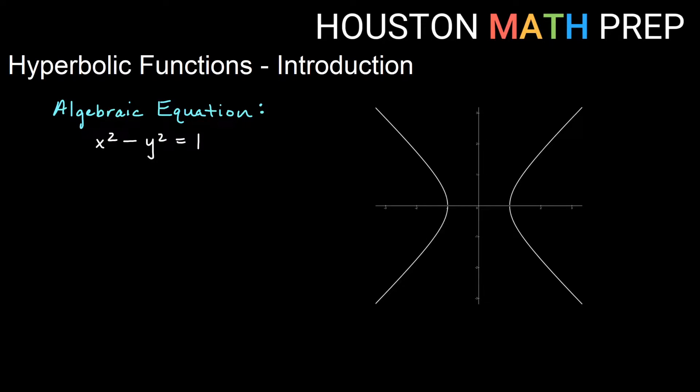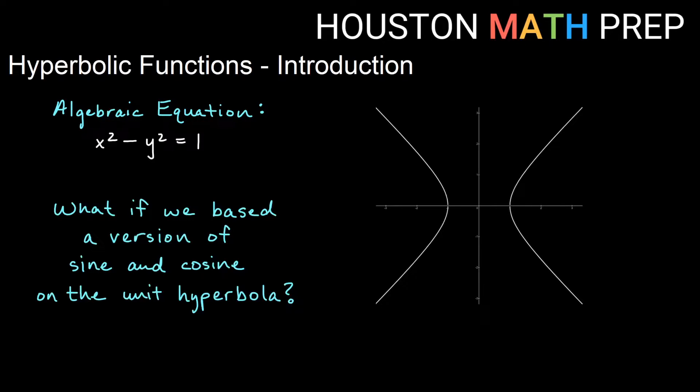So the question in our video today is, why the unit circle? Why couldn't I use something like the unit hyperbola, which I have here? So instead of x squared plus y squared equals 1, we have x squared minus y squared equals 1, our unit hyperbola. Could we do a similar thing where we base some version of sine and cosine not on the unit circle, but on the unit hyperbola instead?